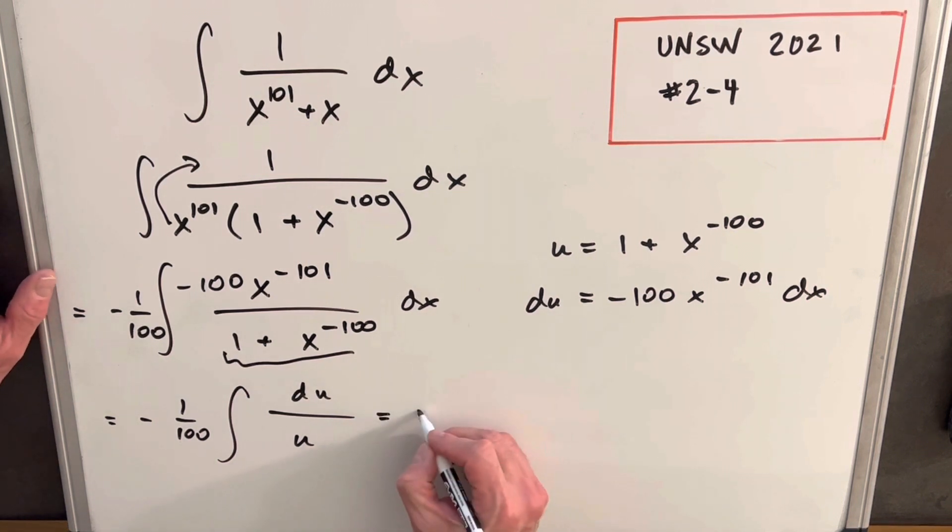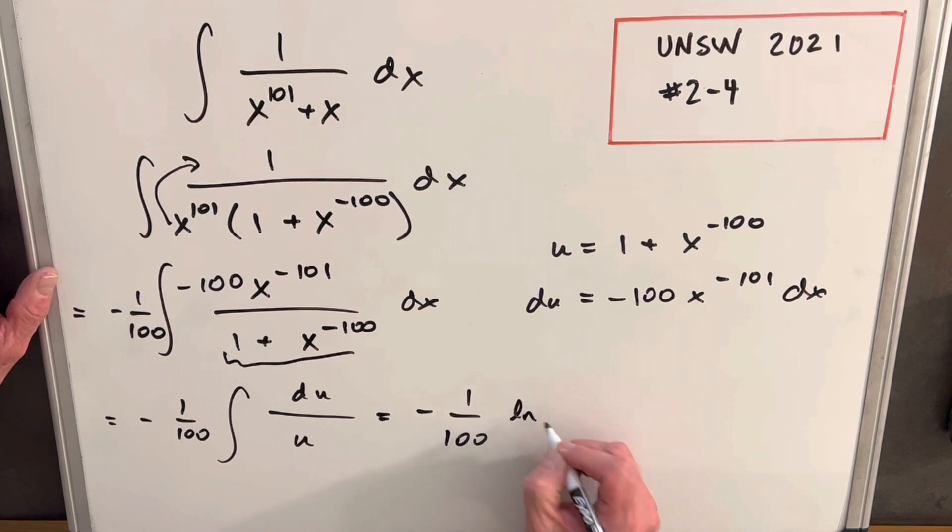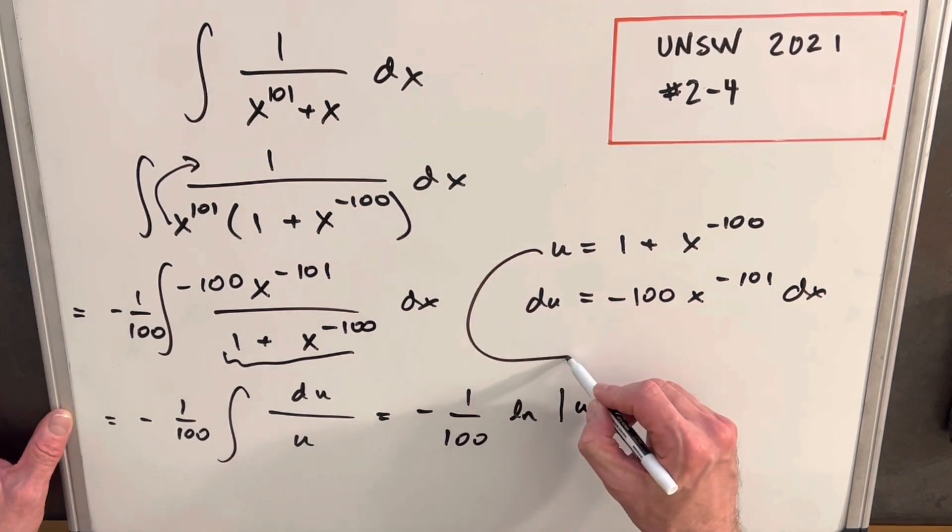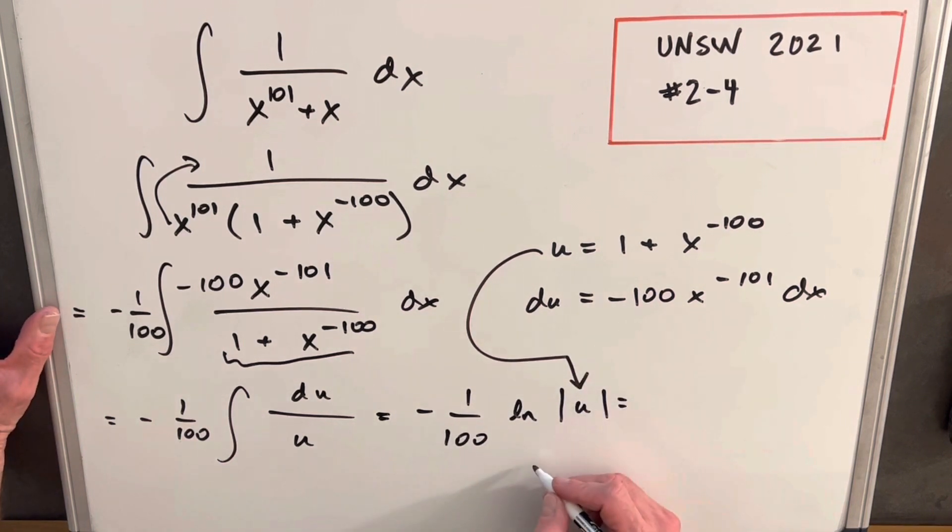So let's see how this looks. We're going to have minus 1 over 100 natural log absolute value u. Then we can back substitute here. And we're left with our final answer.